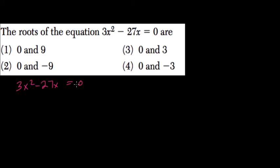So what's the common factor here? Well, these both have 3x in common, so 3x times x minus 9 equals zero. So 3x could equal zero, as one of the numbers we're multiplying here to get zero, or x minus 9 could equal zero.